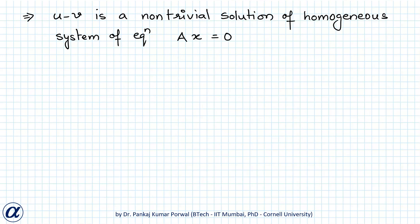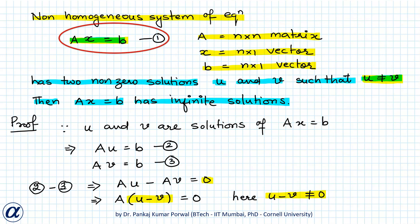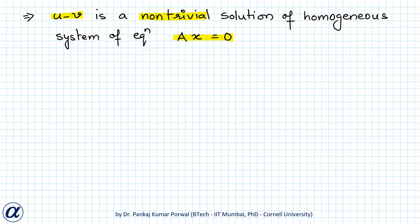Here note that by non-trivial we mean not 0, and this AX equals 0 is the corresponding homogeneous system to our given non-homogeneous system AX equals B. So our homogeneous system AX equals 0 has a non-trivial solution U minus V, and that is only possible if the determinant of A is 0.